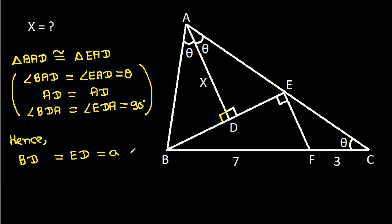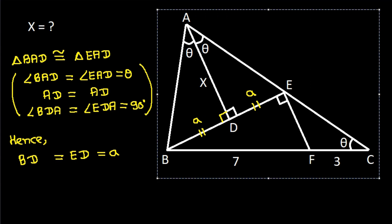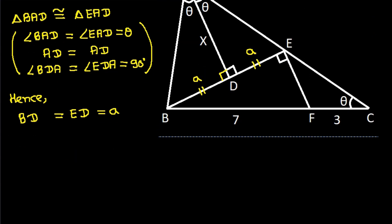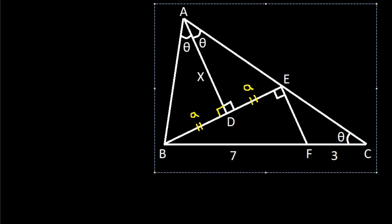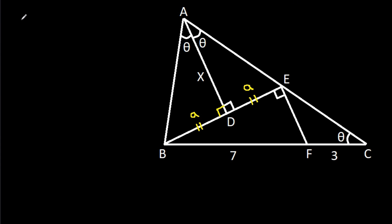Suppose BD is equal to ED, that is A. Now, we have angle ADE is equal to angle FEB, that is 90 degrees.